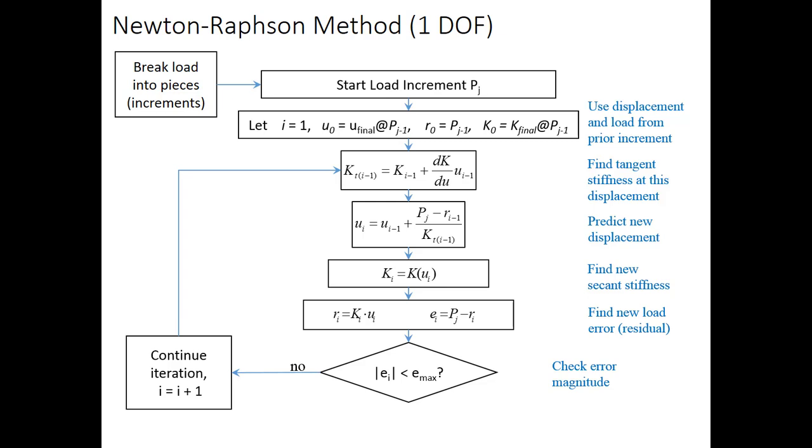And that'll take us back up to the tangent stiffness. We recalculate that, and we go back through the process. Now, if we were going to do the modified Newton-Raphson, here's where the change comes in. Modified Newton-Raphson skips the recalculation of the tangent stiffness. We go right in with the existing tangent stiffness. That saves us a lot of time, and then we continue to loop around.